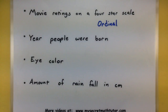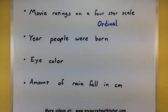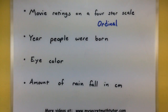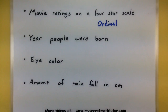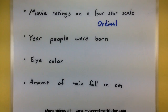Moving on: year that people were born. I'm gathering people's birth years. Can I order the data? The answer is yes — people born in earlier years versus later years can definitely be ordered by their birth year. If I take differences in those years, does that make sense? If someone was born in 1990 versus 1980, is that difference of 10 years meaningful? In this instance, yes — that makes the person 10 years older. That's useful information.